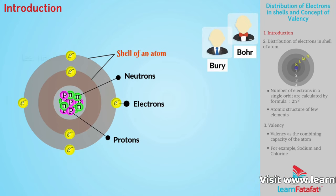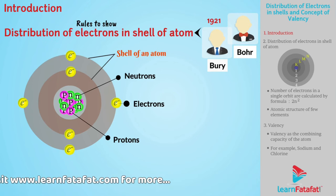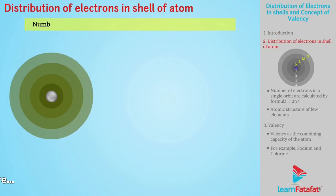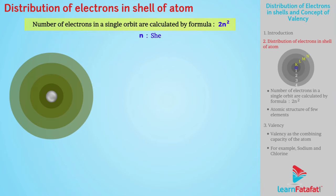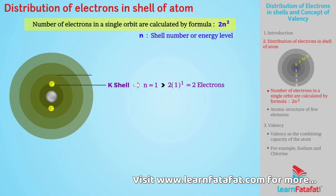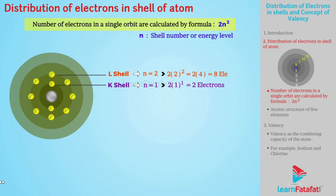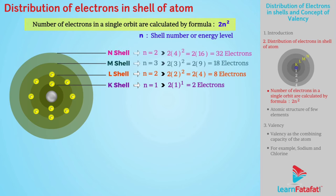Bohr and Bury in 1921 presented some rules to show the distribution of electrons in the shells of an atom. The number of electrons in a single orbit is calculated by the formula 2n², where n is the shell number or energy level. The K shell is the first shell, where n = 1; therefore, the K shell will have 2 electrons. Similarly, the L shell will have 2 × 2² = 2 × 4 = 8 electrons. In this way, electrons in different energy levels are easily determined.